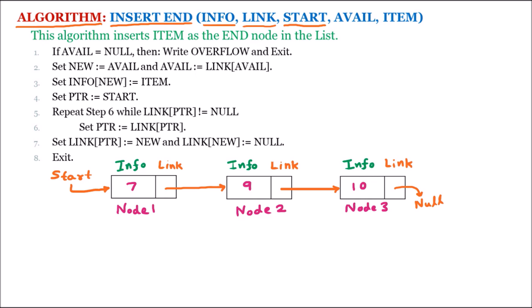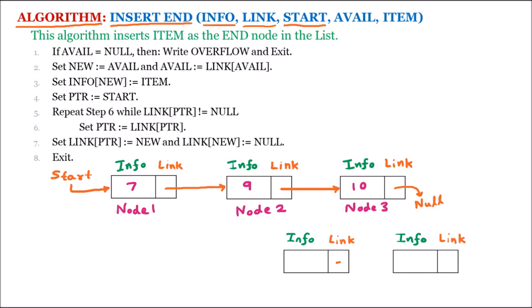The system contains a list of free spaces called the avail list. Let us suppose there are two free nodes. Nodes of the avail list also contain two parts: the first one is info and the second one is link. The link part of the first node points to the next node, and the link part of the next node has null. There is an avail pointer which points to the first node.